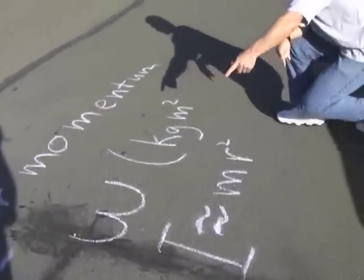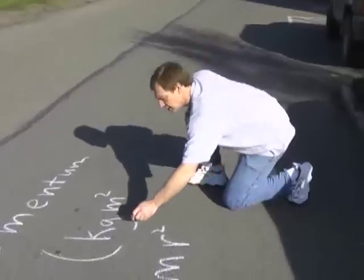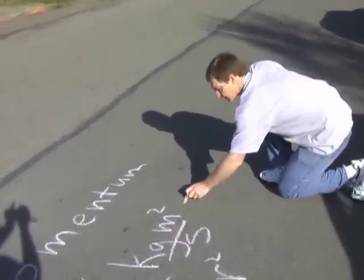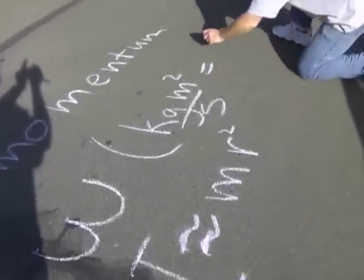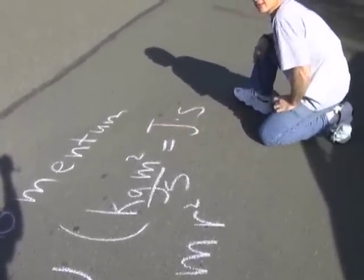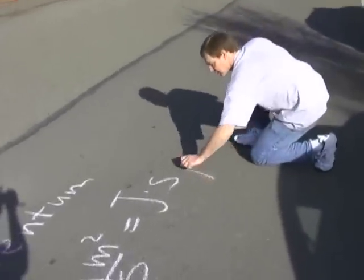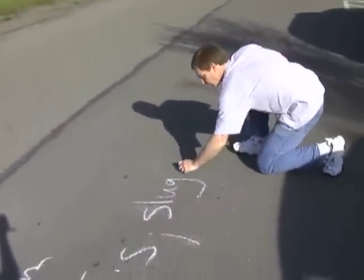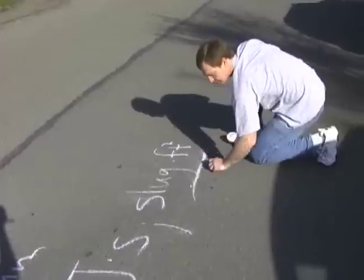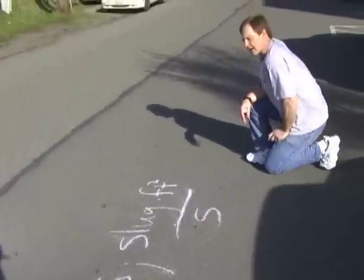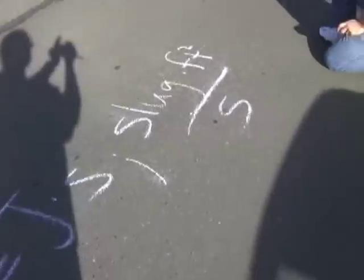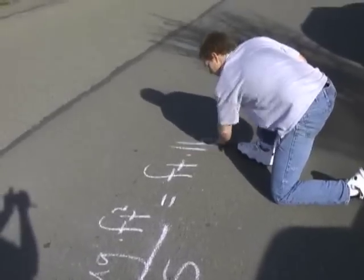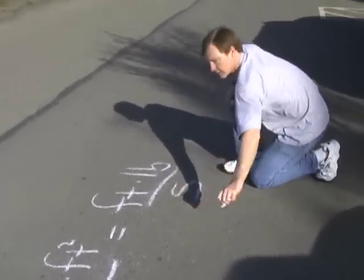I is kilogram meter squared. Omega is radians per second. So angular momentum would be kilogram meter squared per second. Or you can rewrite that as joules times seconds. In English units, that's slug times feet squared per second, which you can rewrite as foot-pounds per second.